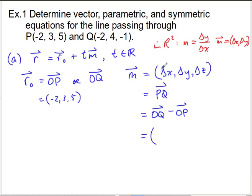And so my vector is going to be delta x or OQ minus OP. That's going to be negative 2 minus negative 2, and then it's going to be 4 minus 3, and then it's going to be negative 1 minus 5. Negative 2 minus negative 2 is negative 2 plus 2 is equal to 0. 4 minus 3 is equal to 1. Negative 1 minus 5 is equal to negative 6. And that is my direction vector.